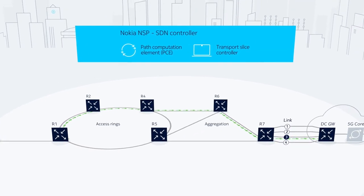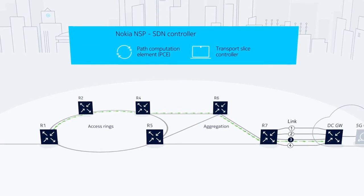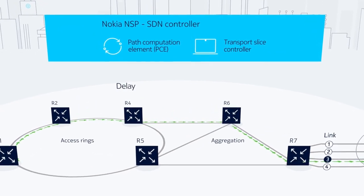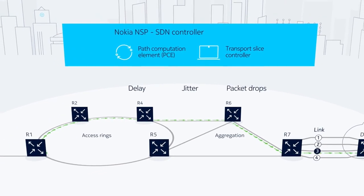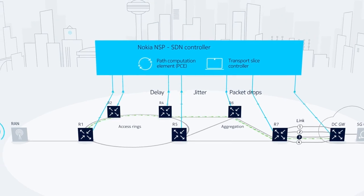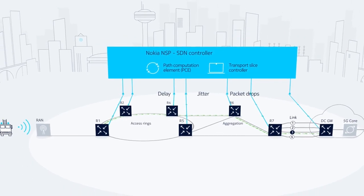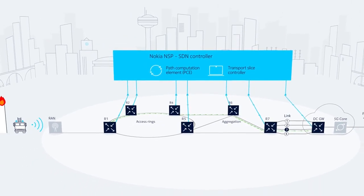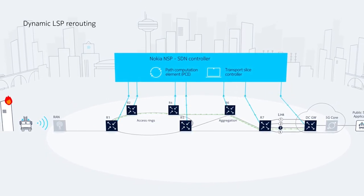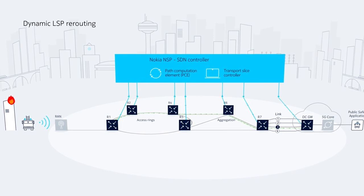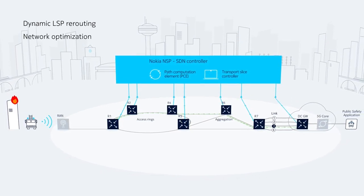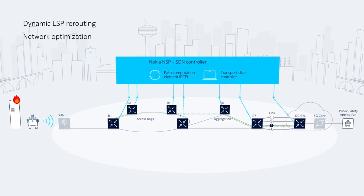Nokia IP routers have a scalable statistics collection infrastructure, with counters tracking performance metrics such as delay, jitter, and packet drops. They continuously report these metrics via telemetry to the NSP. With a full end-to-end view of the transport network, the NSP can automatically react to changing network conditions, proactively avoiding congestion, while ensuring optimal routing performance and effective network utilization.